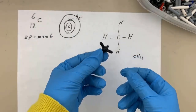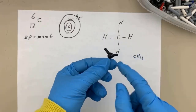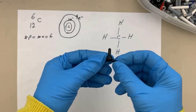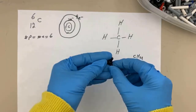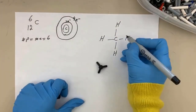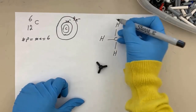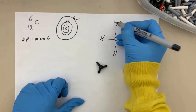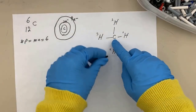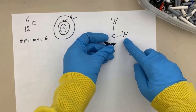The black block represents the carbon atom. As you can see, it has four bonding arms. I'm going to number the hydrogen atoms so you can follow me, and now I'm going to make the bond between carbon and hydrogen.